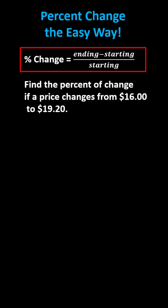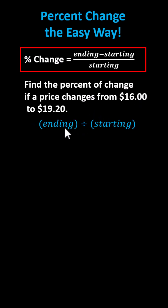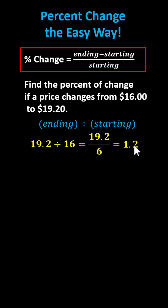Let's find the percent of change if a price changes from $16 to $19.20. To do this, we want to determine how many 16s, or how many copies of 16, are in 19.2. That means we take the ending amount and divide by the starting amount: 19.2 divided by 16.